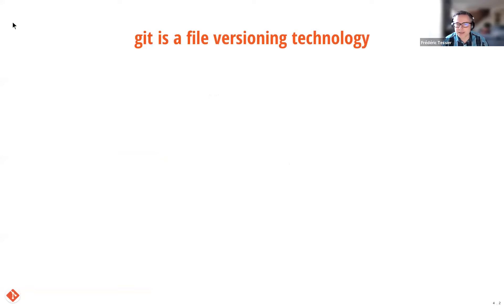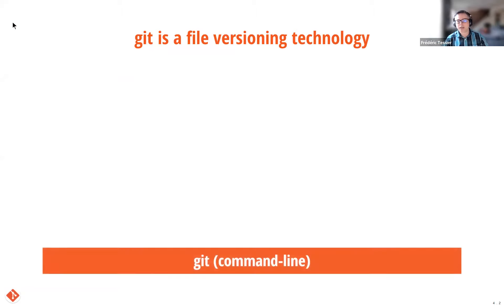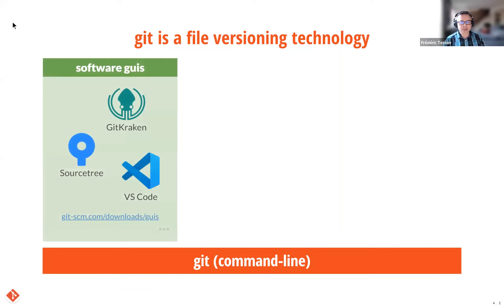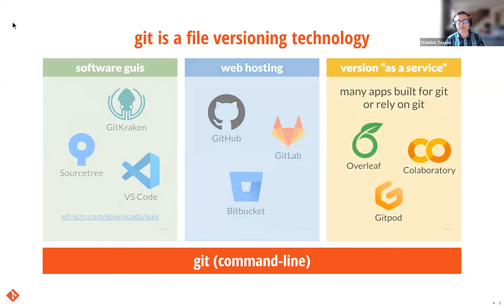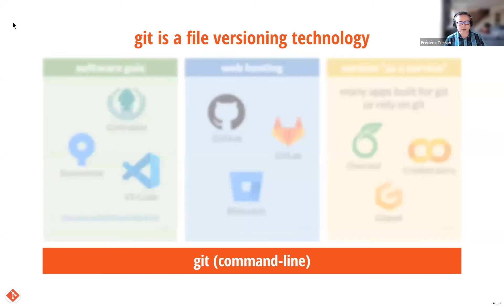Git is a core technology for version control — it is much more than just one other software. This talk focuses on the foundation: the Git command line. There is sometimes confusion about what Git means, because many tools are in turn built on this foundation. There are dozens of Git GUIs that offer convenient visual interfaces. There are hosting services in the cloud that let you store and share your work in a repository. And there are many applications that implement version control as a service running Git under the hood.